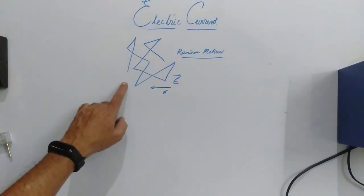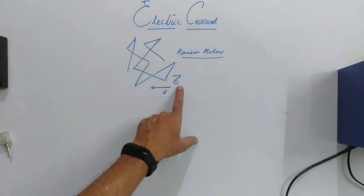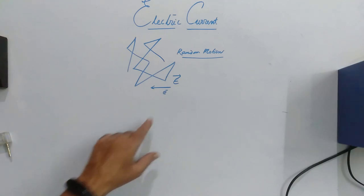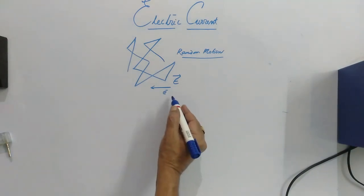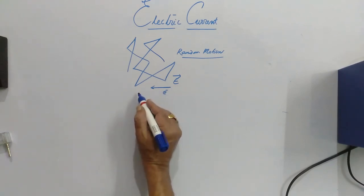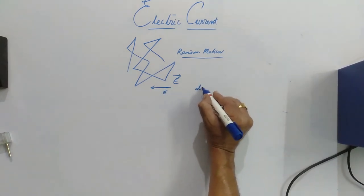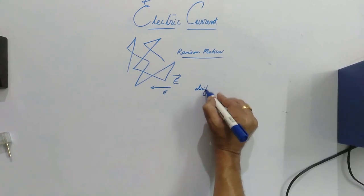Remember, as long as the electron is in random motion, it will never constitute the current. But once the electric field is there, the electrons will gain a velocity in the opposite direction of electric field. And this is called drift speed or drift velocity.